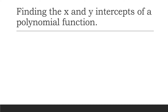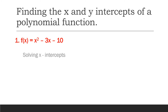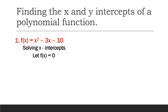Now, how do we find x and y intercepts in a given function? We have here example number 1: f(x) = x² - 3x - 10. Solving for the x intercept — when we solve for the x intercept, we will let f(x) be equal to 0.